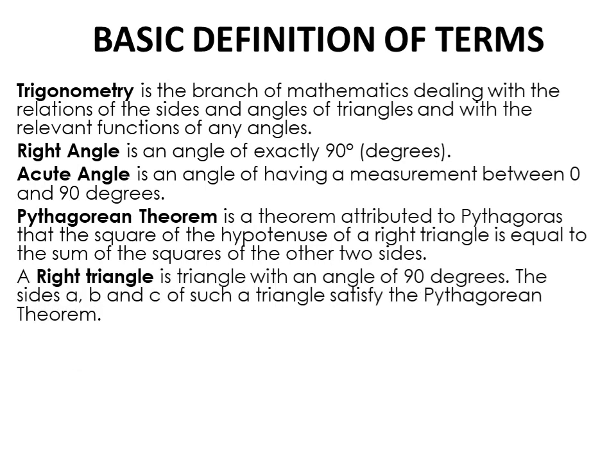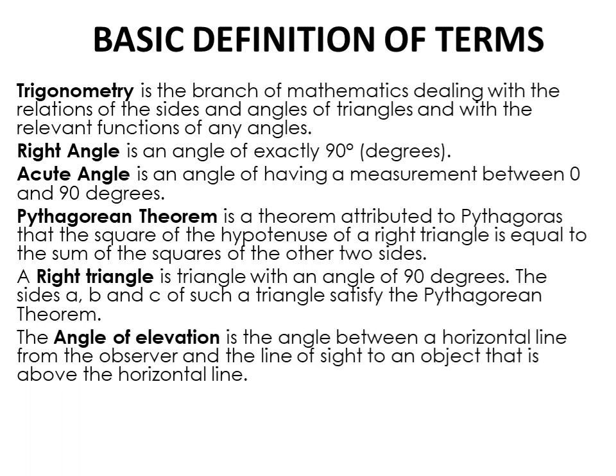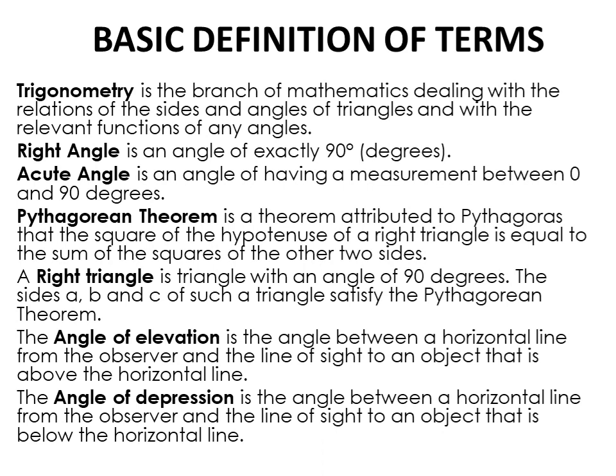A right triangle is a triangle with an angle of 90 degrees. The sides A, B, and C of such a triangle satisfy the Pythagorean theorem. We also have the angle of elevation — it is the angle between a horizontal line from the observer and the line of sight to an object that is above the horizontal line. And the angle of depression is the angle between a horizontal line from the observer and the line of sight to an object that is below the horizontal line.